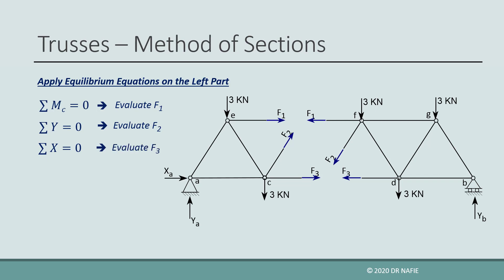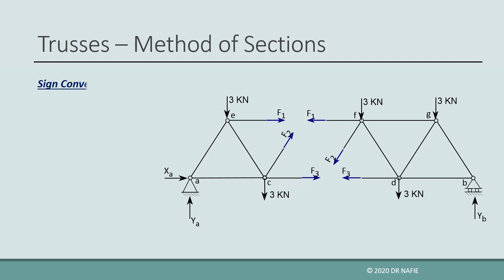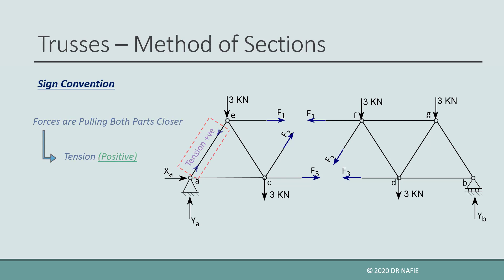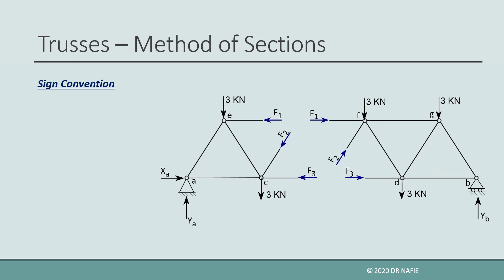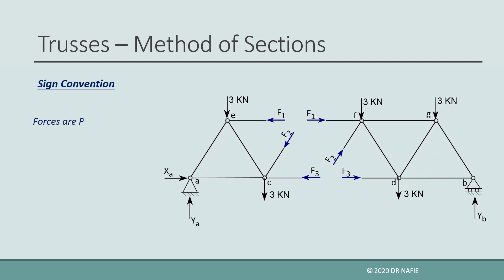Now that all the internal forces have been evaluated, we can apply the equilibrium equations on the right part of the truss to validate the results. Before working on examples, we need to establish the same convention of the internal forces. The internal force in a truss member will be either compression or tension. If the forces are pulling the two parts closer to each other, they are tension — drawn emerging out of the joint and assumed positive. If the forces are pushing the two parts away, they are compression — drawn directed towards the joint and assumed negative.